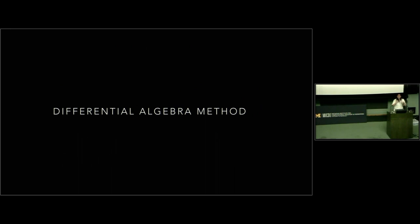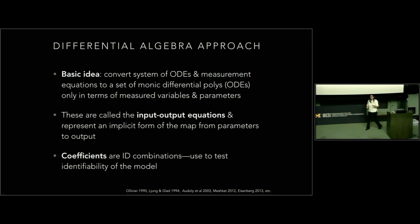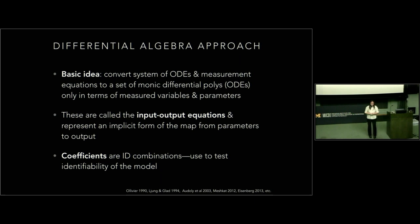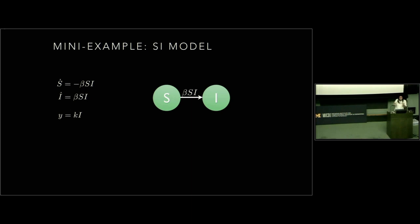Another method that's gotten a lot of traction and that we work on a lot is the differential algebra approach. Without diving into all the details — how many people have taken ring theory or abstract algebra? A few. The basic idea is that many of the models we work with — ODE models, discrete models — can be framed in an algebraic setting. You can then use tools from computational algebra to get a more explicit form of the map from parameter space to output space by eliminating out your unobserved variables. The map from parameters to output is implicit because you simulate the model and see what happens, but computational algebra tools let you get a more explicit form.